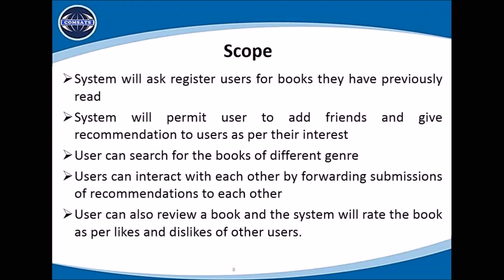Scope: The system will ask users for books they have previously read. The system will permit users to add friends and give recommendations as per their interest. Users can search for books of different genres, interact with each other by forwarding suggestions or recommendations, and review books. The system will rate books based on likes and dislikes of other users. Muhammad Junaid Hassan will provide further explanation.